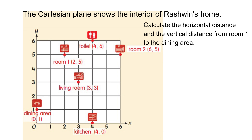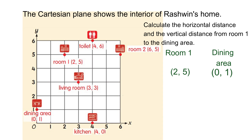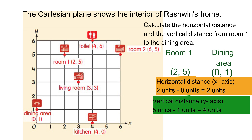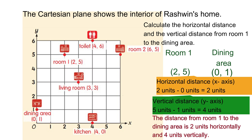Now calculate the horizontal distance and the vertical distance from room one to the dining area. The coordinate of room one is two, five and the coordinate of the dining area is zero, one. To find the horizontal distance: two minus zero equals two units. To find the vertical distance: five minus one equals four units. So the distance from room one to the dining area is two units horizontally and four units vertically.